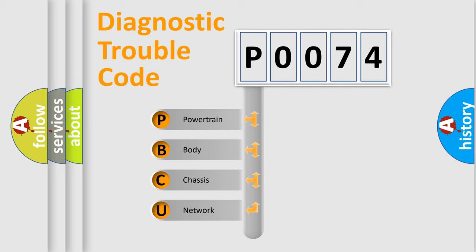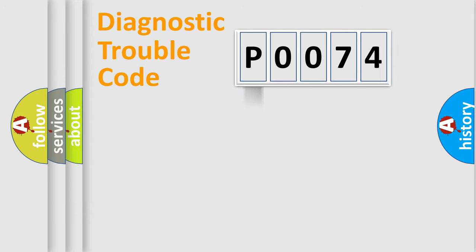We divide the electric system of automobile into four basic units: Powertrain, Body, Chassis, and Network.